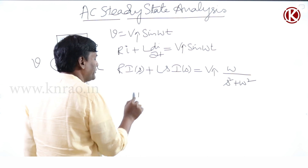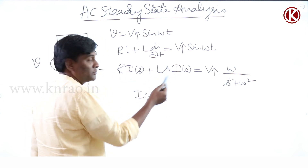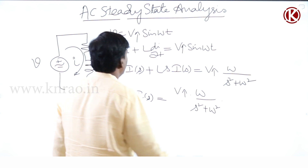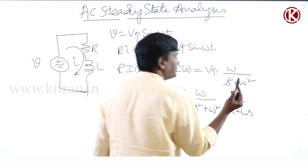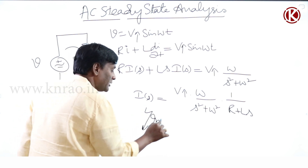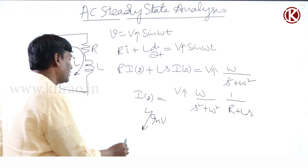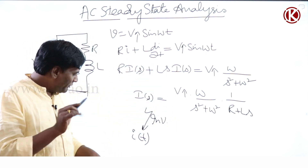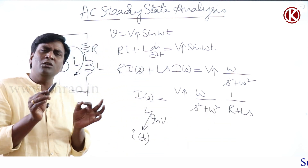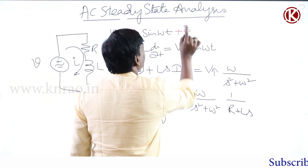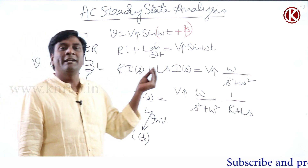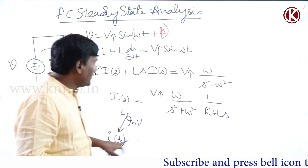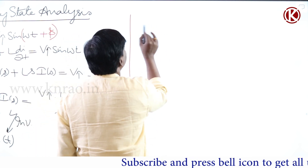So I(s) = V_max · ω / [(s² + ω²)(R + Ls)]. Then you have to do the inverse Laplace transform to get i(t) in the time domain. Now, imagine if the source voltage has a small phase constant — for example, V = V_max·sine(ωt + π). How much more difficult does it become?